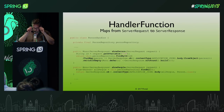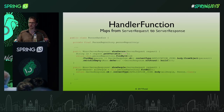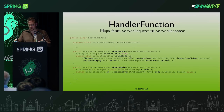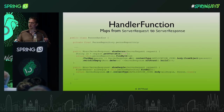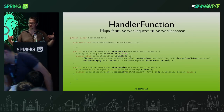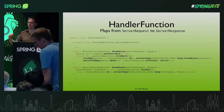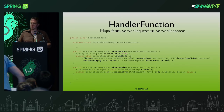We start with the handler function. The handler function in this framework is basically the same thing as your annotated request mapping method — it handles a request. As a function, it maps from a so-called server request to a server response. This framework is very functional, so there are no side effects. Everything is returning something, taking only the arguments given to it, and then returning something you can build upon as well.